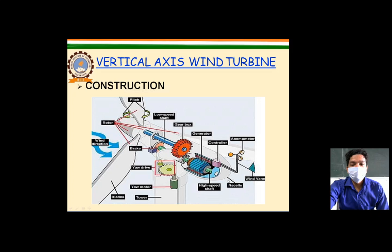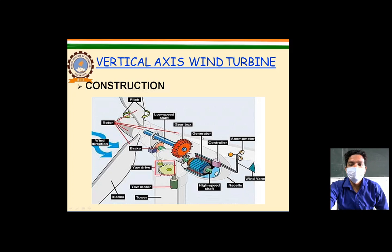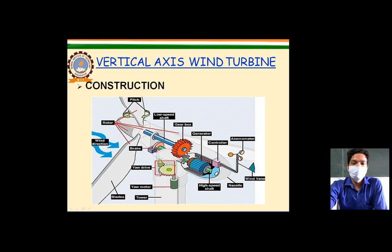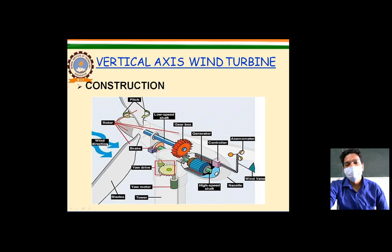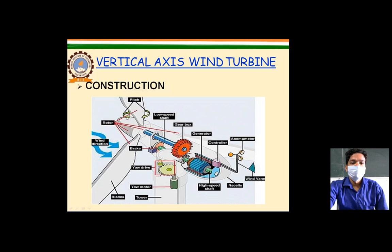In the construction of a wind turbine, the wind vane is at the top, with the nacelle below it. The high-speed shaft, controller, and generator are mounted inside. The shaft is connected via a gearbox to the low-speed shaft. A brake is used when the situation requires stopping. There is also a yaw drive and yaw motors. The tower supports the structure, and the blades are mounted on the rotor. The wind flows in a specific direction, and the rotor with its blades is connected to the low-speed shaft.